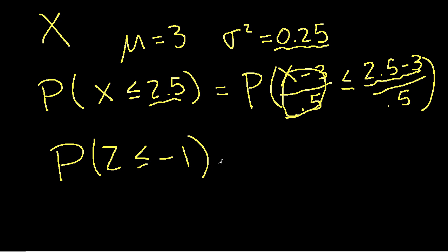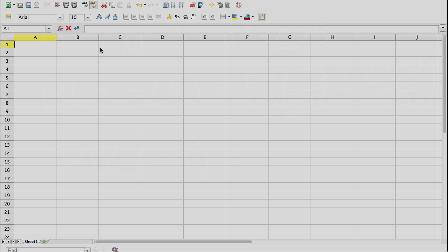And we can either look this up in a table, or we can compute it using a spreadsheet. So to compute this using a spreadsheet, we would use the command equals norm s dist of minus 1.